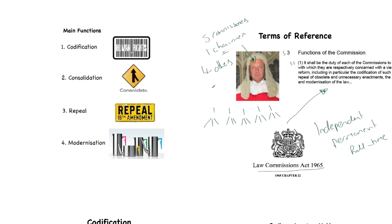They do that in three main ways: by codifying the law, by consolidating the law, and by repealing the law. All three of those things together lead to a modernisation of the law — they bring the law up to date to make sure that the laws by which we are governed are current and suit the needs we want them for. We're going to take a look at each of these three areas in turn.